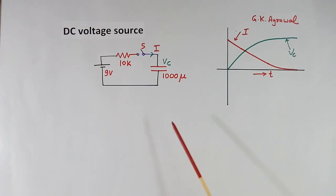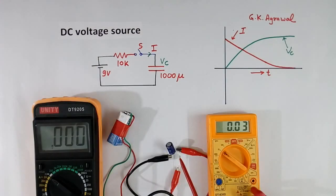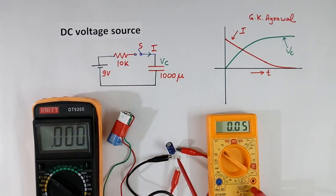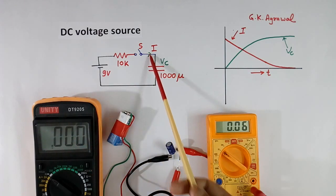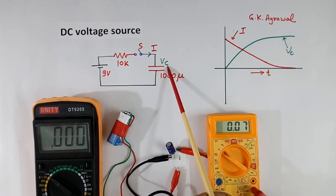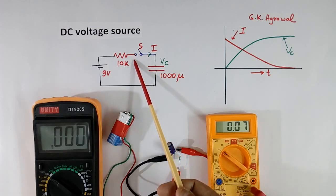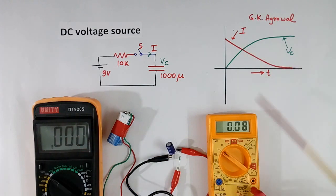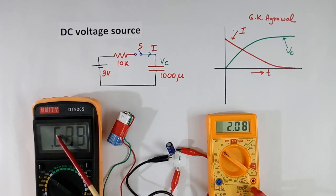I will show a practical demonstrating this. This is the setup. This battery is here, this resistor is here, this capacitor is here. This multimeter will read current; this multimeter will read voltage across the capacitor. When I switch this switch ON, it will show maximum current, then slowly current will reduce, and here voltage will increase slowly. Now I am switching ON. I have switched ON. See, current is high. Current is coming down. Here voltage is going up.